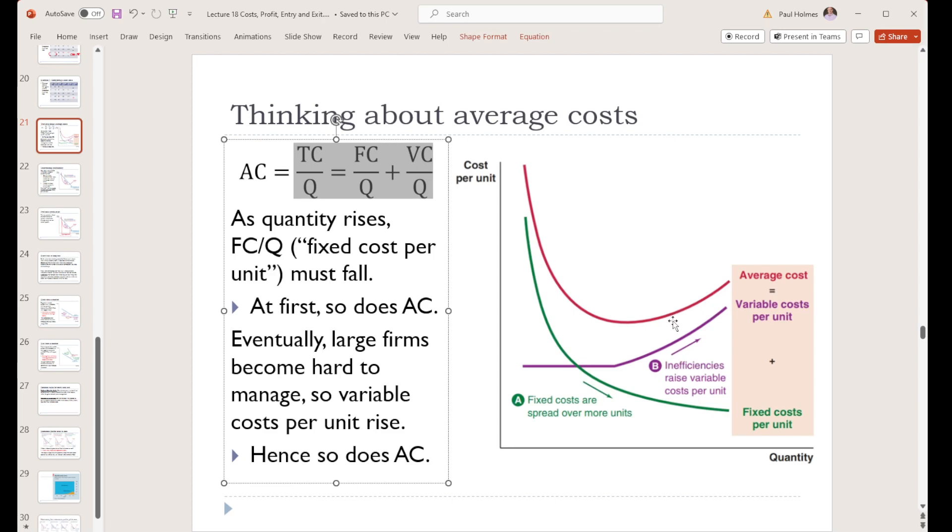What does that mean then that it'll end up looking like? At first, our average cost curve is going to look like our fixed cost per unit curve. Our fixed cost per unit curve is falling fast, so our average cost curve will be falling fast as well. If our variable cost per unit aren't changing very much, then that difference between those two curves is just going to be a constant. But as we get larger and larger, remember these fixed costs per unit go to zero, or at least go asymptotically to zero, arbitrarily close to zero.